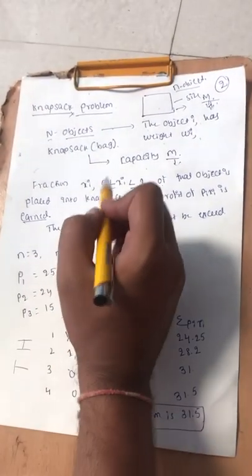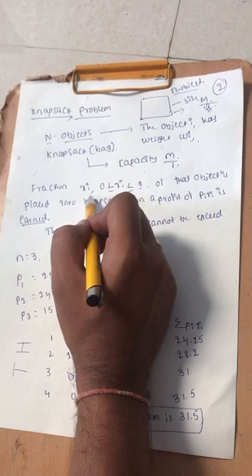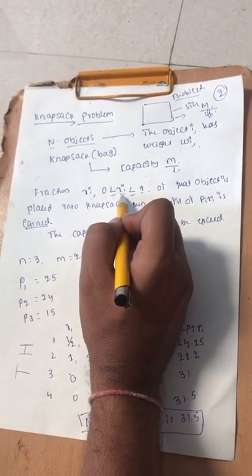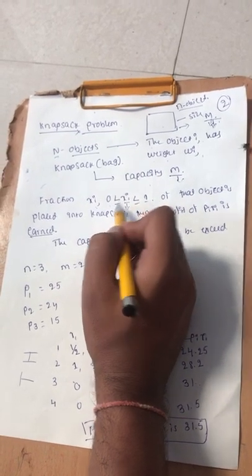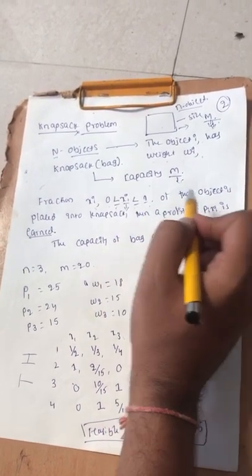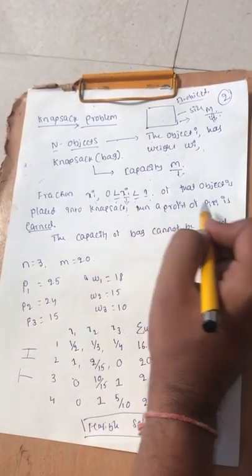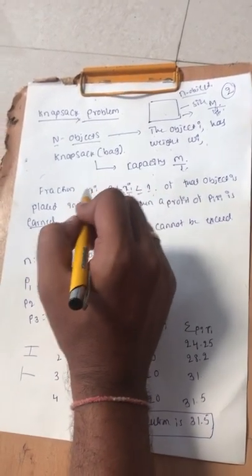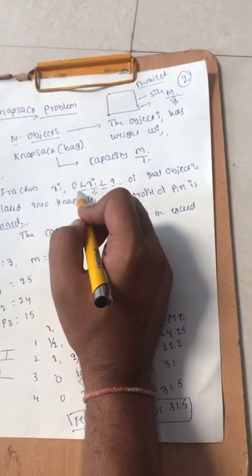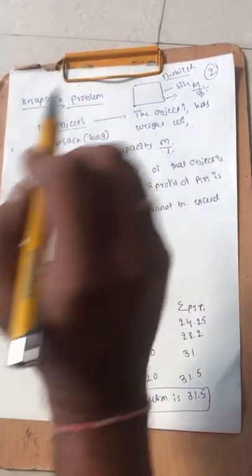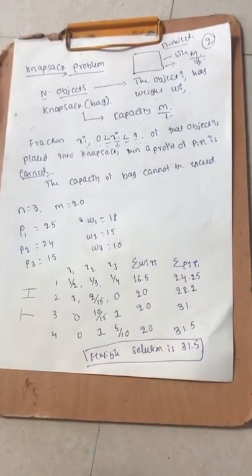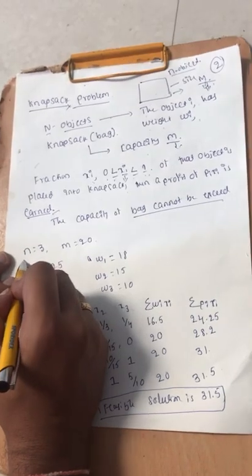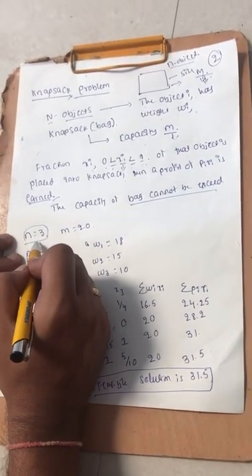For each object i, we define x_i as a fraction where x_i is greater than zero and less than or equal to one. If that fraction of object i is placed into the knapsack, then the profit p_i times x_i is earned. The fraction x_i should be greater than zero and less than or equal to one. The bag capacity cannot be exceeded.